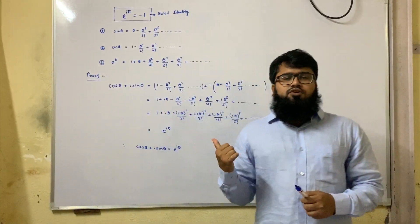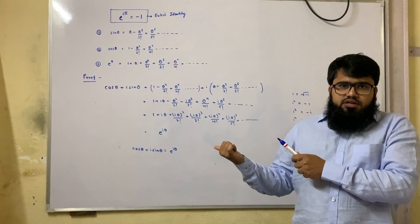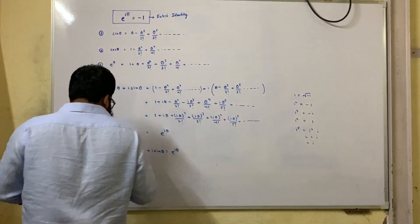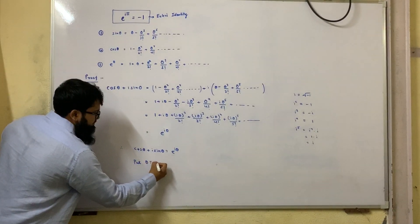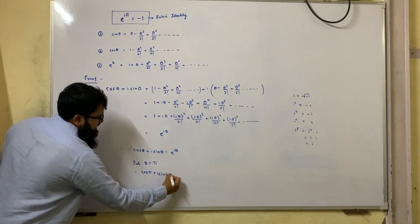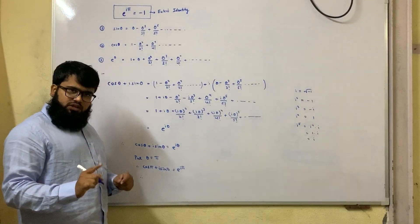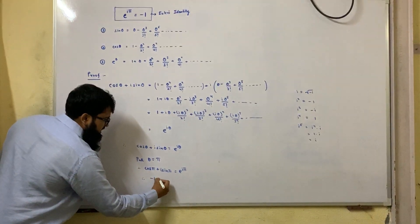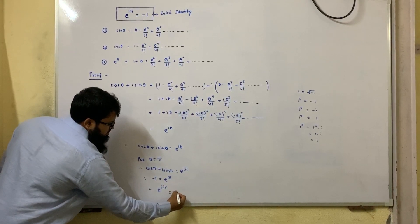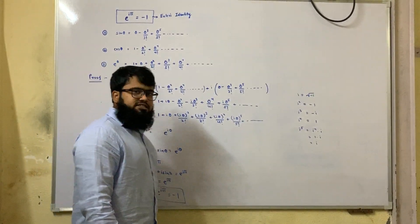This formula is called Euler's formula. If you substitute theta equals pi in this equation, you will get Euler's identity. So let us substitute theta equals pi. Therefore cos pi plus i sine pi equals e to the power i pi. Cos pi is minus 1 and sine pi is 0, so you get minus 1 equals e to the power i pi. Therefore e to the power i pi equals minus 1. This formula is called Euler's identity.